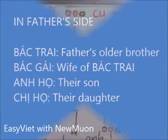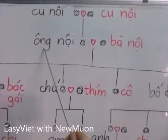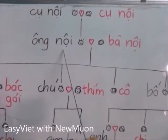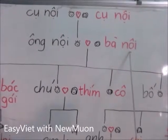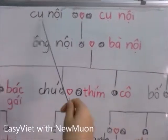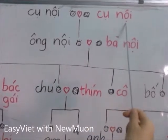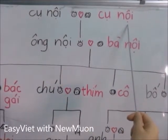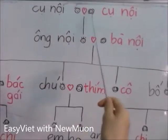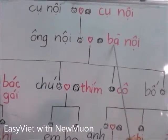In my father's side, my grandfather is Ông Nội, my grandmother is Bà Nội. My great-grandparents are Cụ Nội. My great-grandfather is Cụ Ông and my great-grandmother is Cụ Bà.